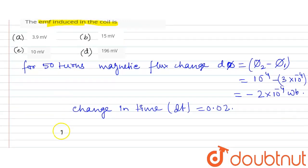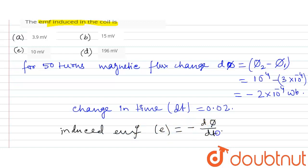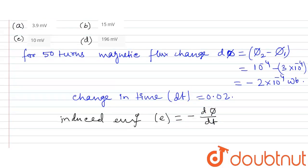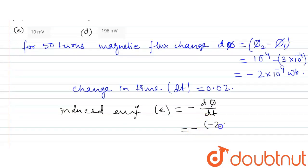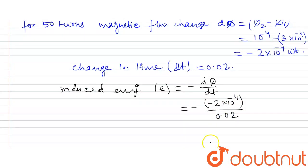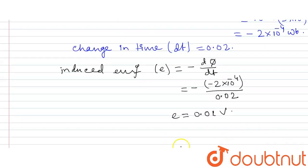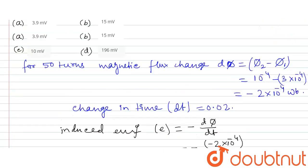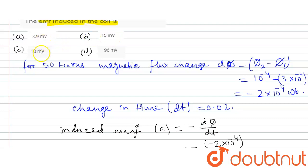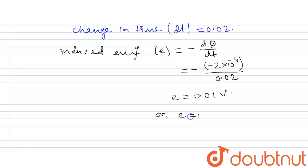The induced EMF is given by e = −dφ/dt. Substituting: e = −(−2×10⁻⁴) / 0.02. Calculating: e = 0.01 V, which can be written as 10 millivolts. If you want to express in millivolts, E = 10 millivolt.